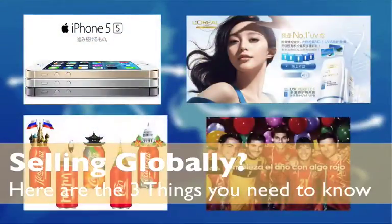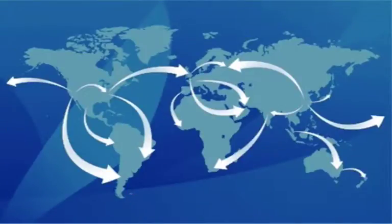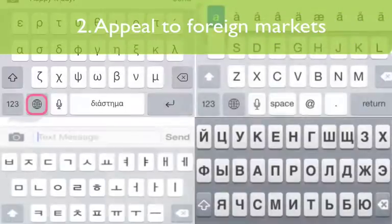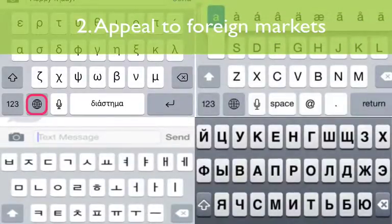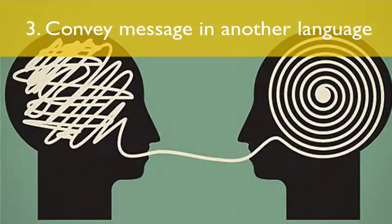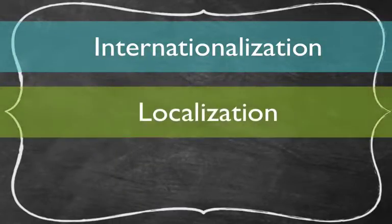If you want to sell basically anything in other countries, there are three relevant activities that you need to know about. One, how to prepare and engineer your product for cost-efficient and fast cultural adaptation. Two, how to make your product appeal to foreign markets. And three, how to convey your message and content clearly in another language. These three processes are called internationalization, localization, and translation.